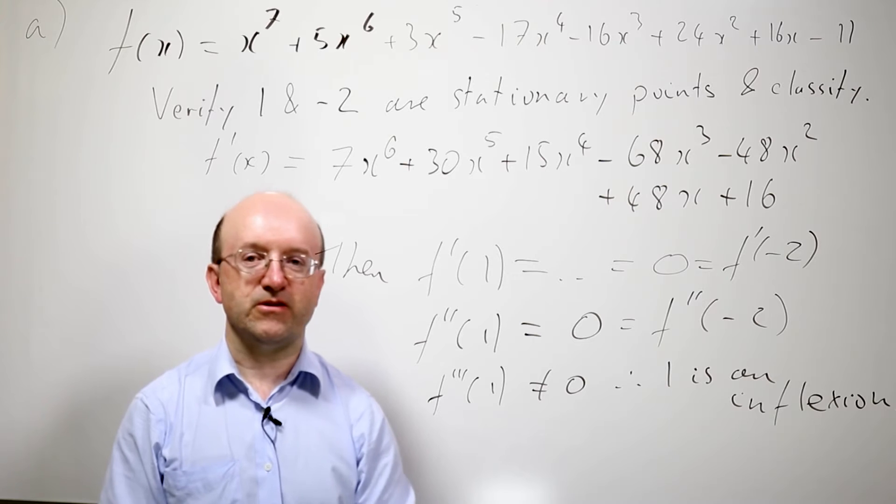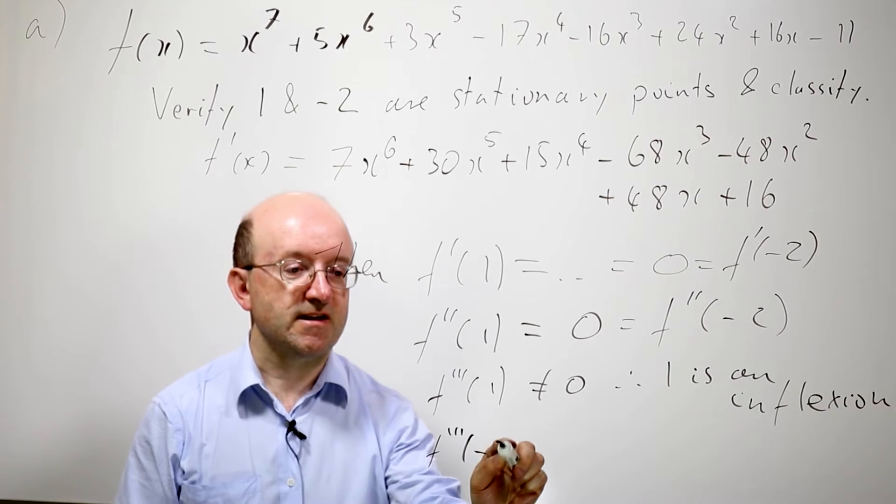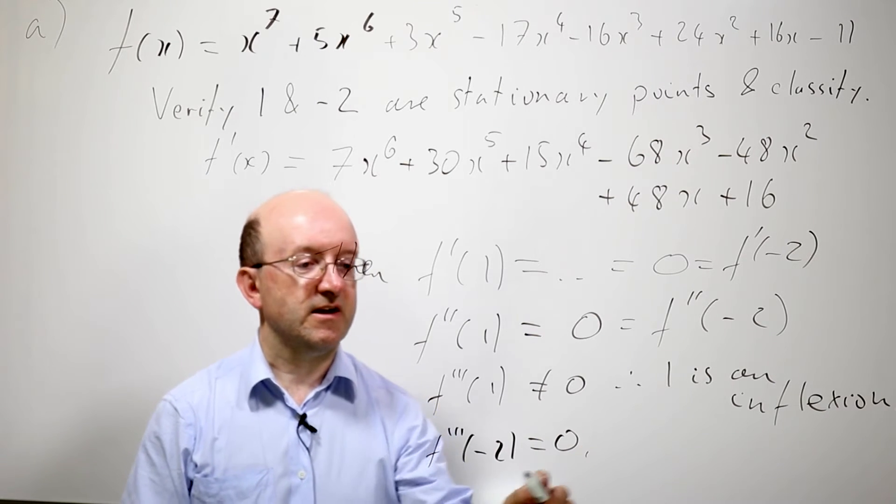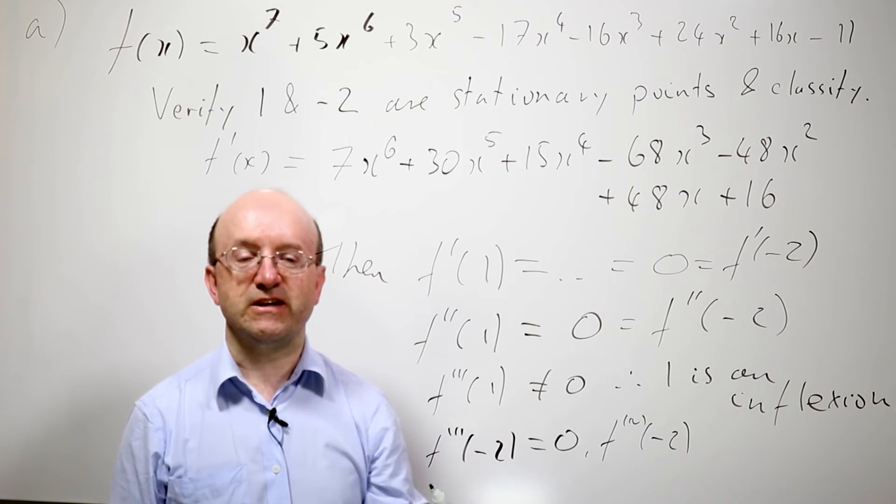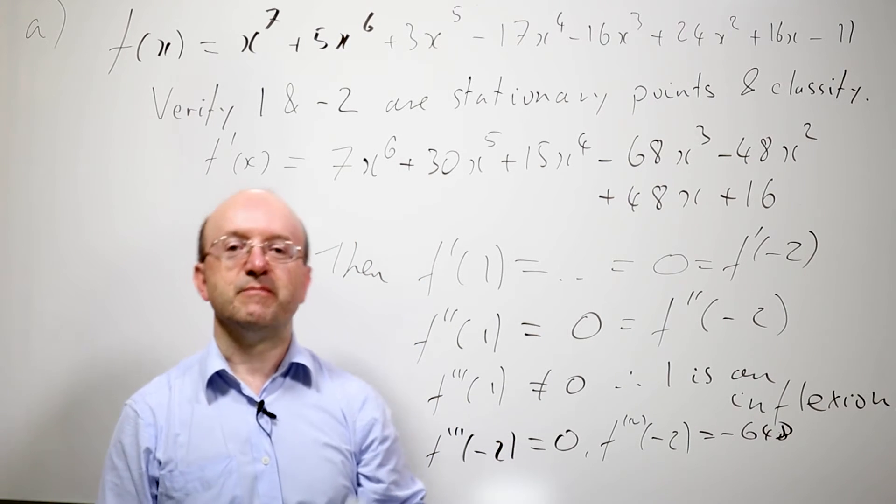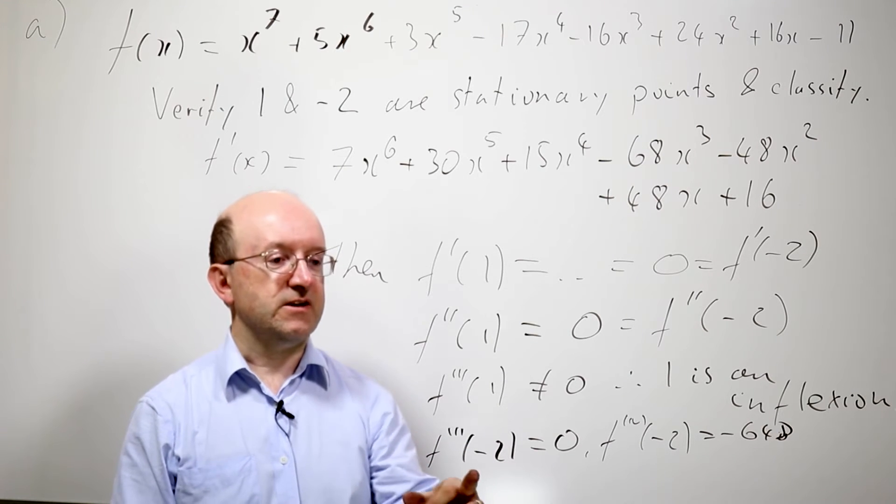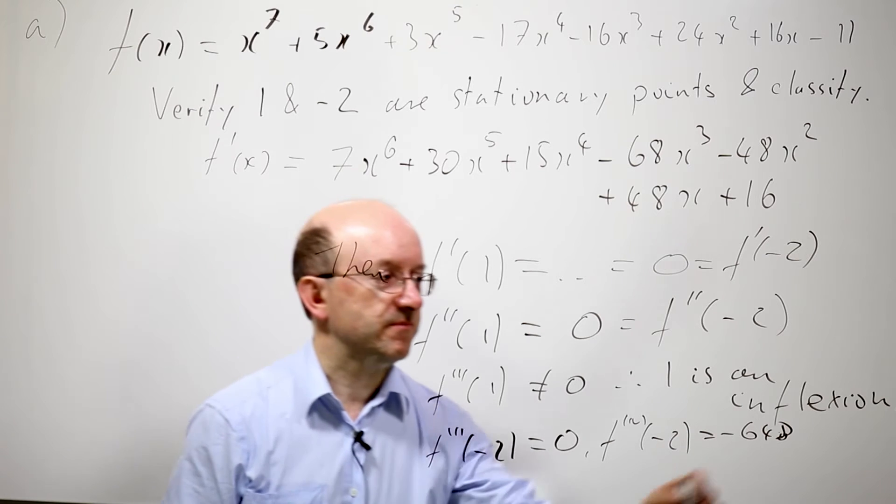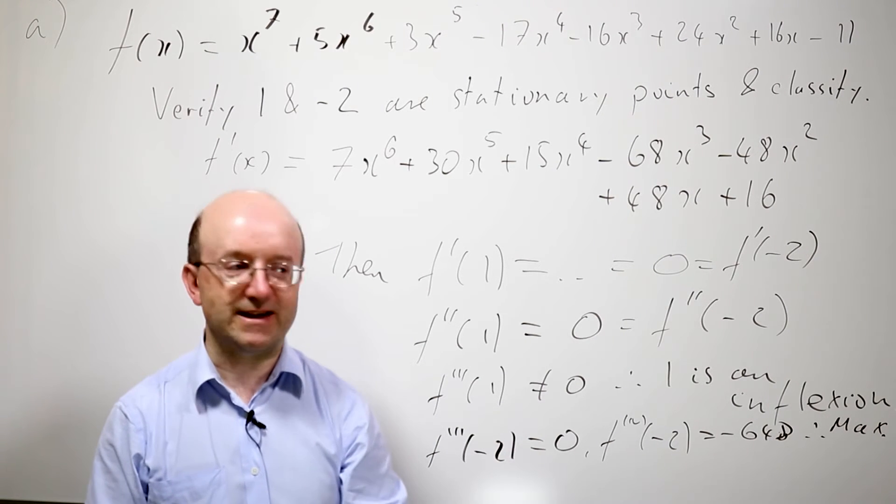So now we have to calculate the third derivative at minus 2. And in fact, we find that the third derivative at minus 2 is 0. So we have to keep going on again. We calculate the fourth derivative at minus 2. And that turns out to be not 0. And in fact, it turns out to be minus 648, or something like that. The important point here is that it's negative. I mean, you can do enough of the calculation to convince yourself it's negative, and that would be enough. And if the fourth derivative is non-zero and the value is negative, that tells us we've got a maximum.